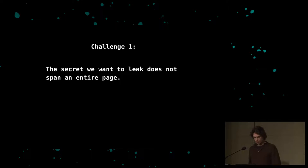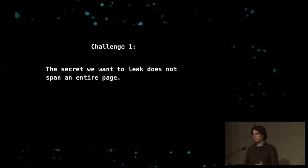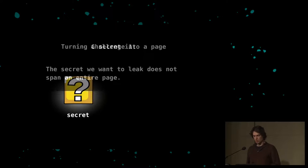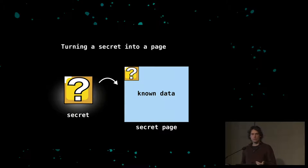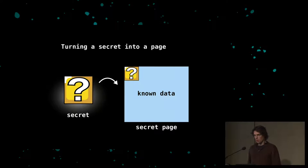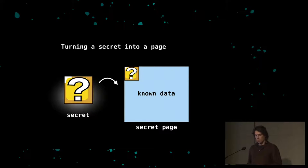There are still problems: the secret we want to leak is probably in a page containing other unknown information, so we can't simply craft a page to leak it. We need to encode the secret into a memory page such that we can retrieve it again. The memory page to leak should contain only the secret and data known to us — either data written by us into the victim's address space, or data whose contents we know.